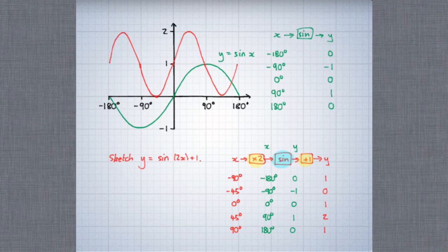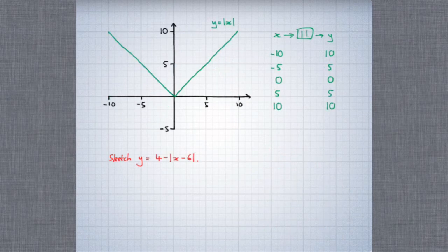So this is the graph of y equals sine of 2x plus 1, and we've obtained that from the graph of y equals sine x by applying two transformations. Here's my last example. This time we're going to draw y equals 4 take away the absolute value of x take away 6, by starting with the graph of y equals the absolute value of x and transforming that.